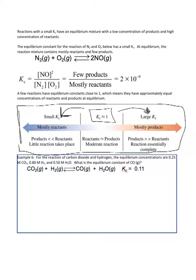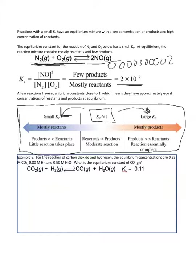This makes sense. Looking at the equilibrium constant for N2 and O2 gas, the Kc is 2 times 10 to the negative 9 — that is a very small Kc. This means that this reaction is mostly reactants, meaning it's mostly nitrogen and oxygen gas. It makes very little nitrogen monoxide.